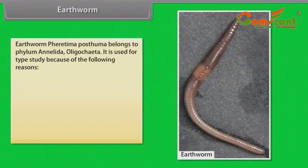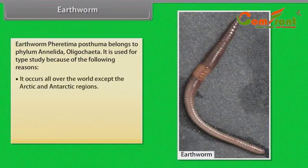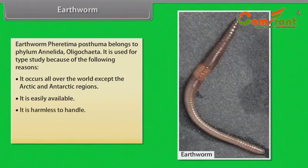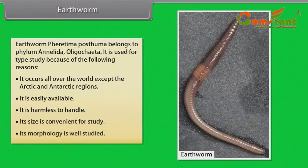Earthworm: Pheretima posthuma belongs to phylum Annelida, Oligochaeta. It is used for type study because it occurs all over the world except the arctic and antarctic regions. It is easily available, harmless to handle, its size is convenient for study, and its morphology is well studied.